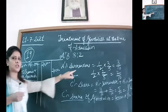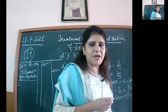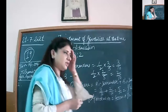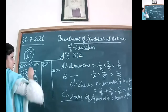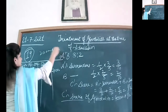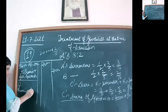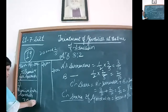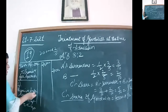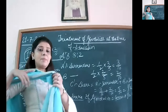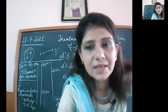Then the premium for goodwill is distributed to the sacrificing partners — both A and B — in their sacrificing ratio of 3:2. So ₹20,000 is split: ₹20,000 × 3/5 = ₹12,000 to A and ₹20,000 × 2/5 = ₹8,000 to B. The entry: premium for goodwill account debited ₹20,000, to A's capital account ₹12,000, to B's capital account ₹8,000 — narration: being premium for goodwill divided in the sacrificing ratio of 3:2.